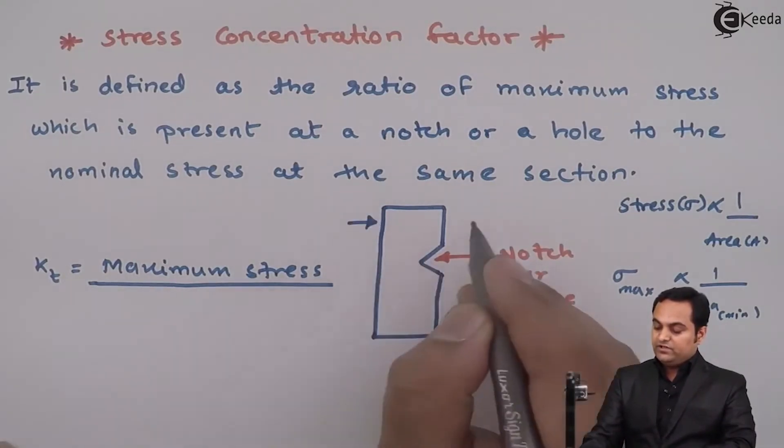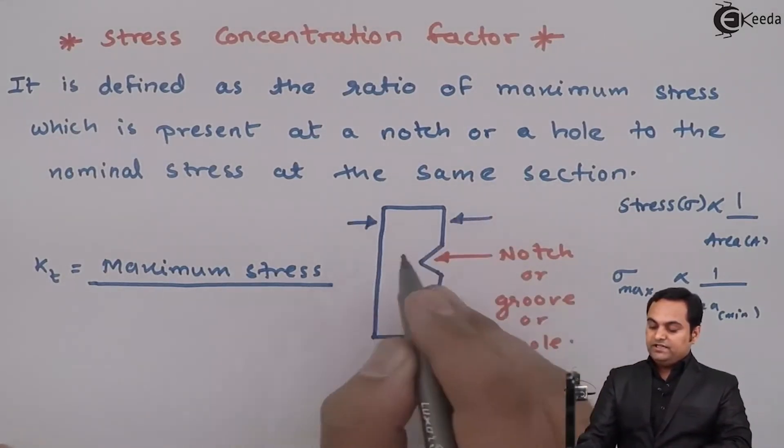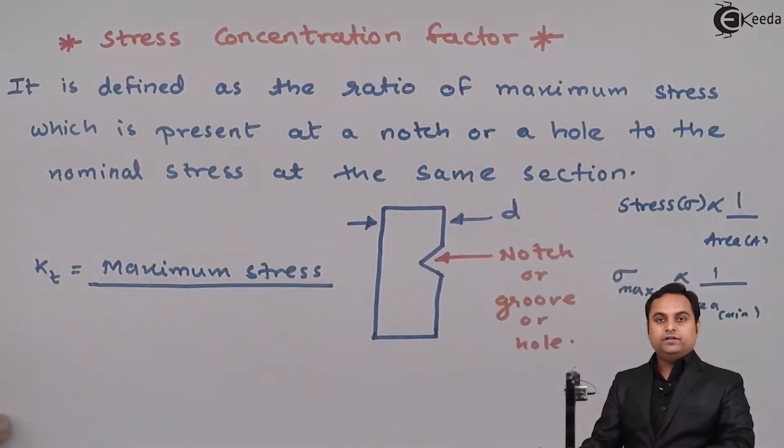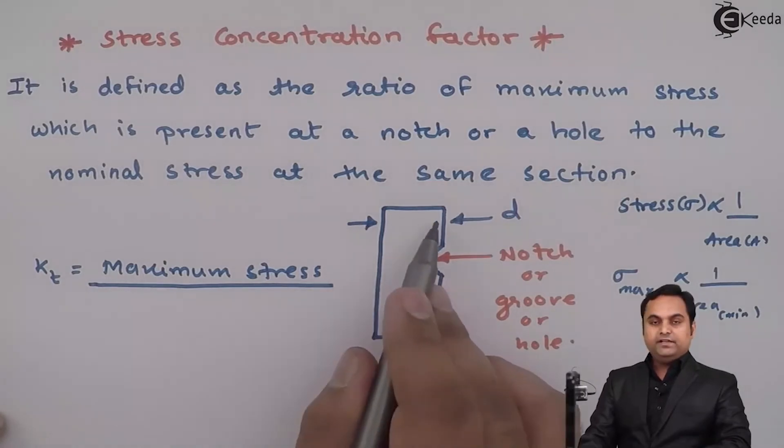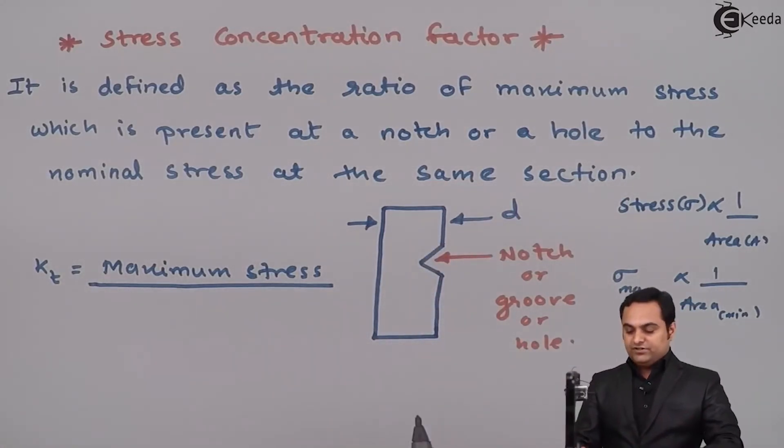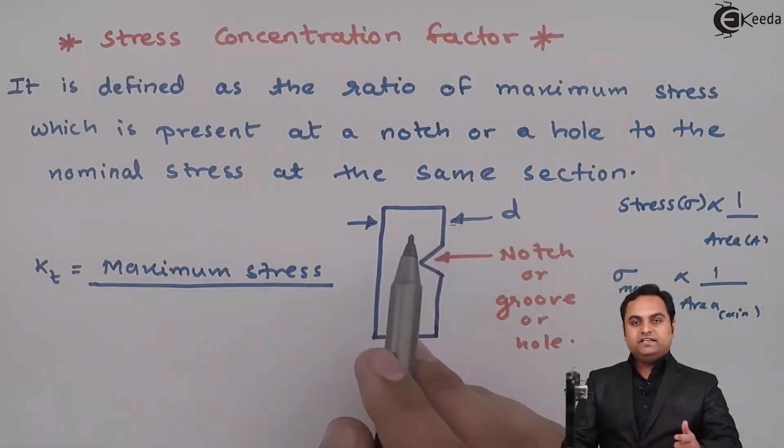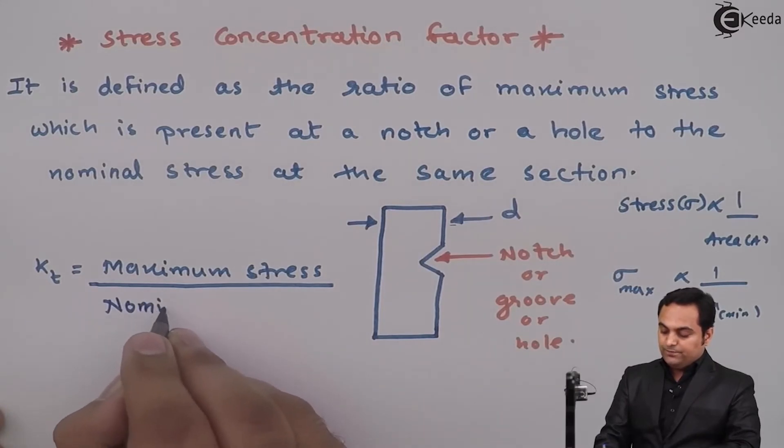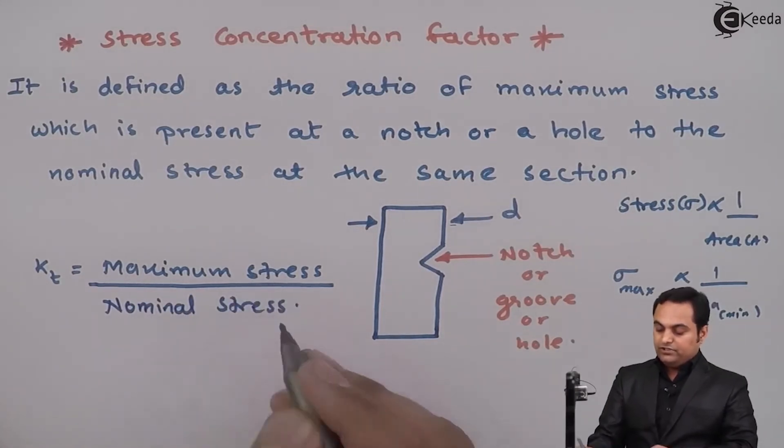Nominal section means the original section. Like for example, if this member has a diameter d, then its original area will be π by 4 d square. So that becomes the nominal area and the stress at that section will be called as nominal stress. The value of stress will be less because the area is more - so maximum stress upon nominal stress.